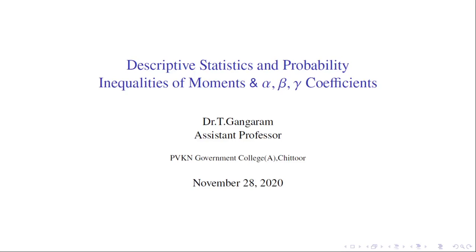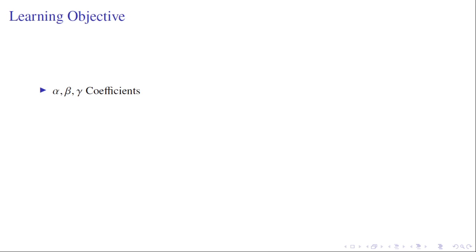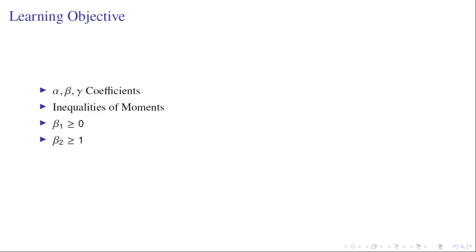Welcome learners. This is a lecture on inequalities on moments and alpha, beta, gamma coefficients. The learning objective of this lecture is to discuss different coefficients like alpha, beta, and gamma coefficients based on moments, and to derive or prove inequalities: β1 ≥ 0, β2 ≥ 1, and β2 ≥ β1.